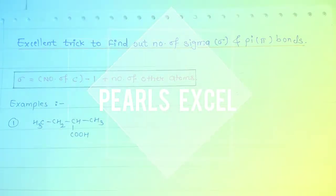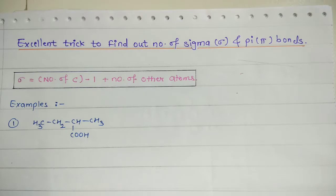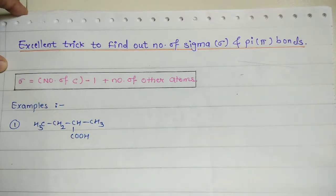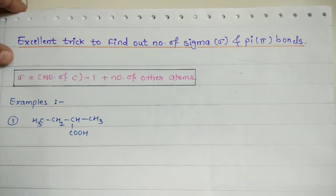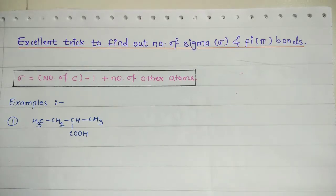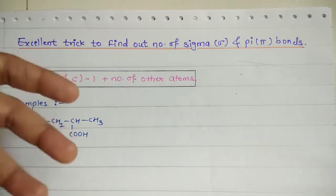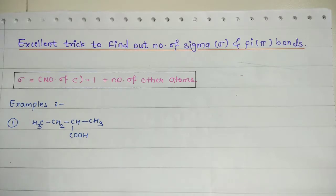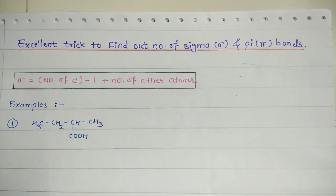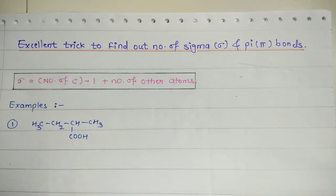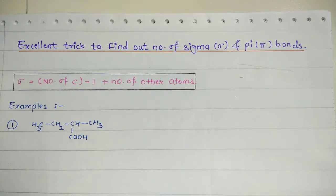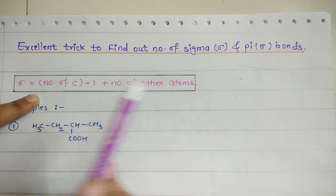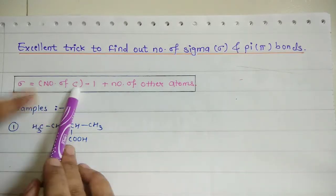Hi, hello students, welcome to Pulse XA. Today in this session we are going to discuss an excellent trick to find out the number of sigma and pi bonds for your organic compounds. Without wasting time, we are going to start with our session. This is a favorite trick — you always need shortcut methods during examination because you don't have that much time to draw everything individually.